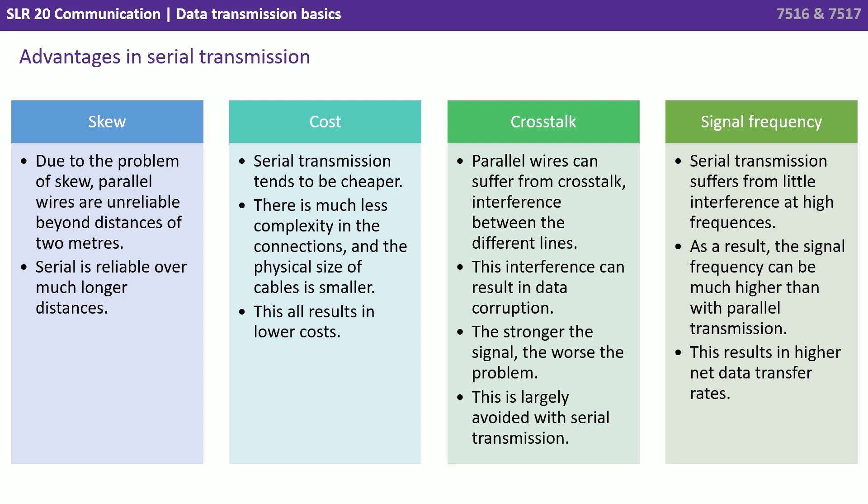Serial transmission also suffers from little interference at high frequencies. As a result, the signal frequency can be much higher than with parallel, and this results in higher net data transfer rates.